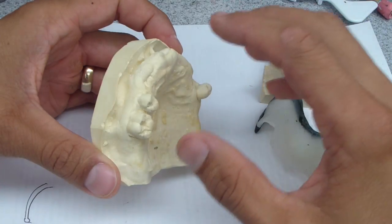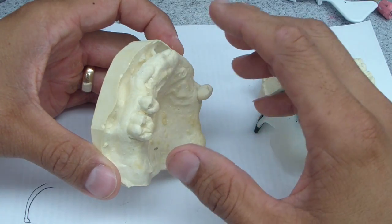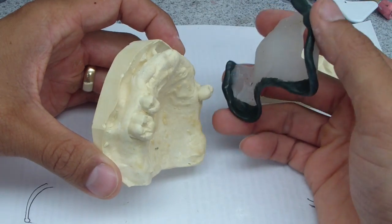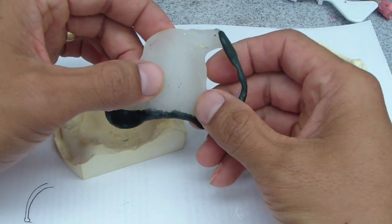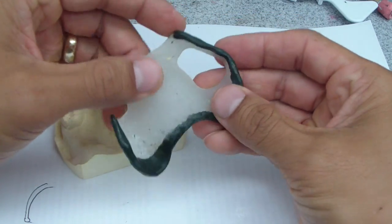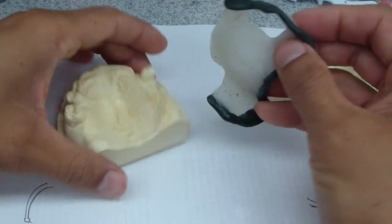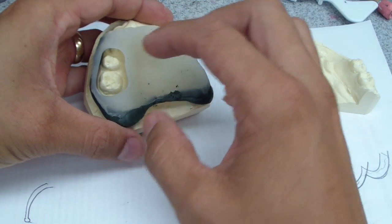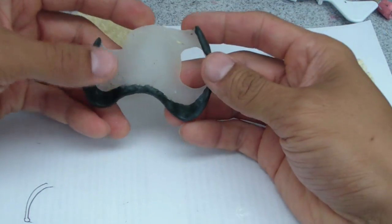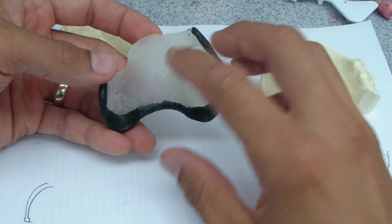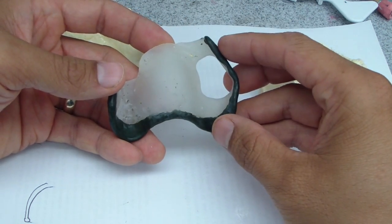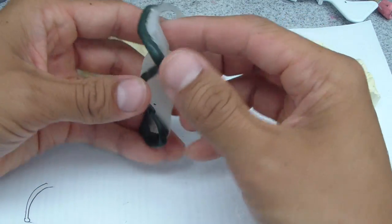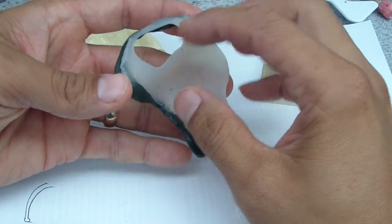So what we did, instead of just using a straight either polyvinyl siloxane impression or an alginate to prevent overextension, we're going to do the sectional impression technique. So I fabricated a custom tray onto which I border molded with green compound. And then, the next stage what we're going to do is a wash with polyvinyl siloxane light body. First place the adhesive actually, then the polyvinyl siloxane wash, and then we're going to remove any of the excess polyvinyl siloxane after it's set.